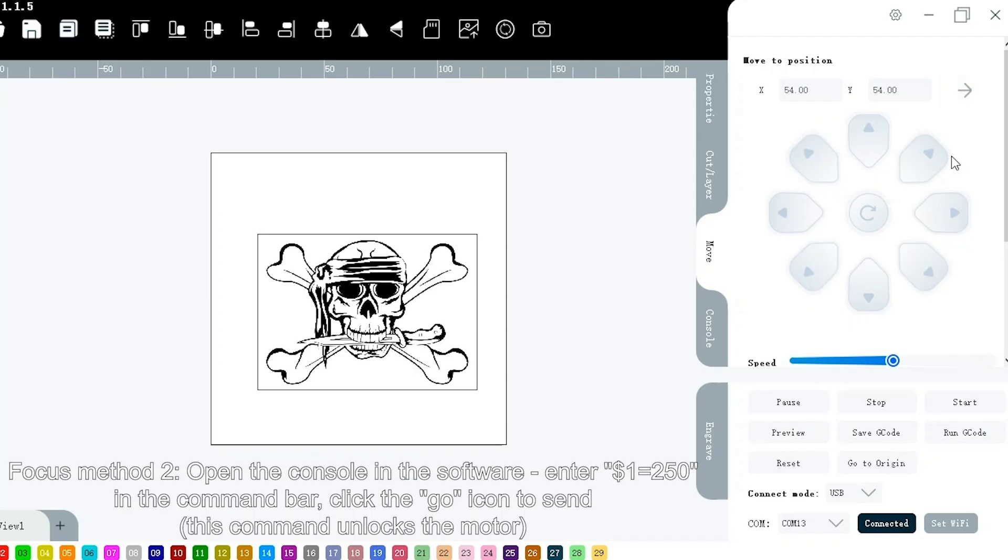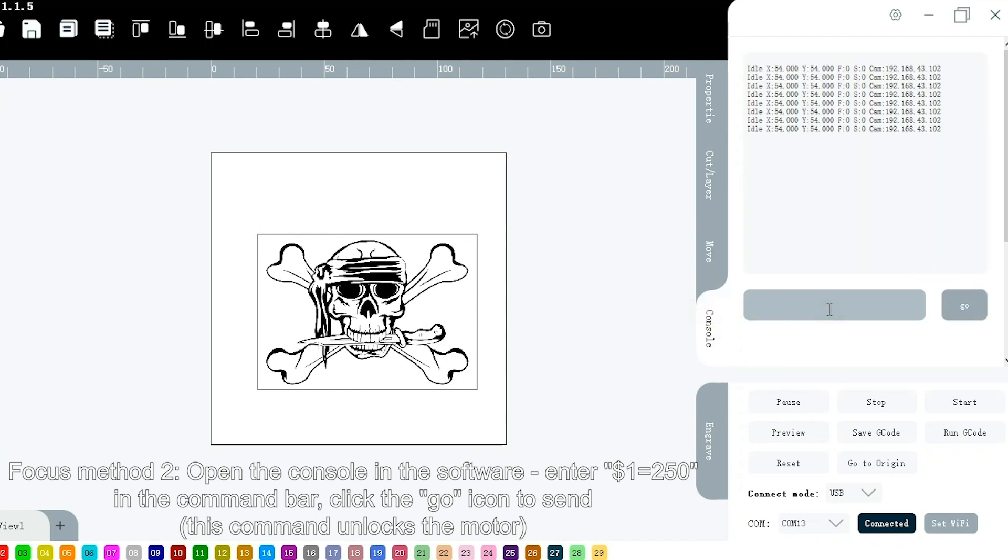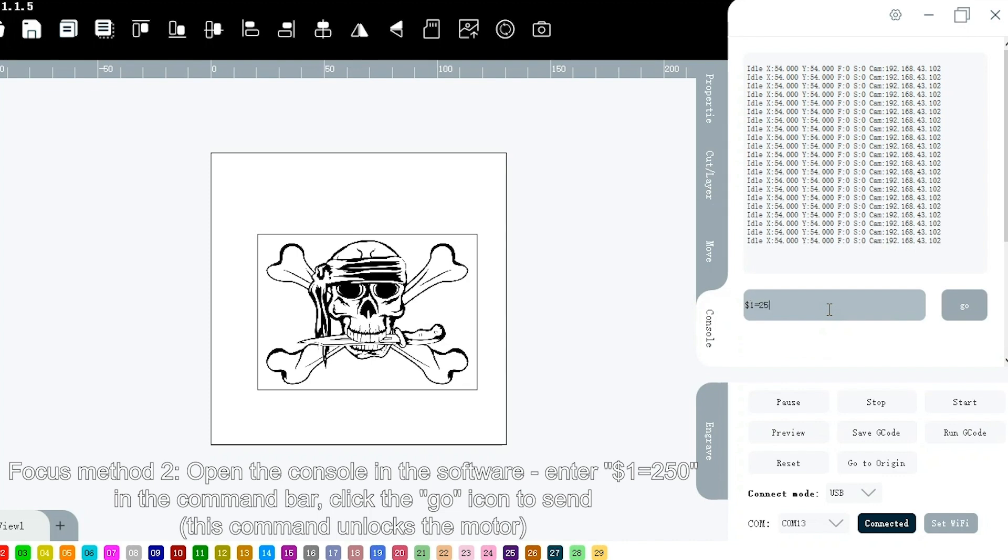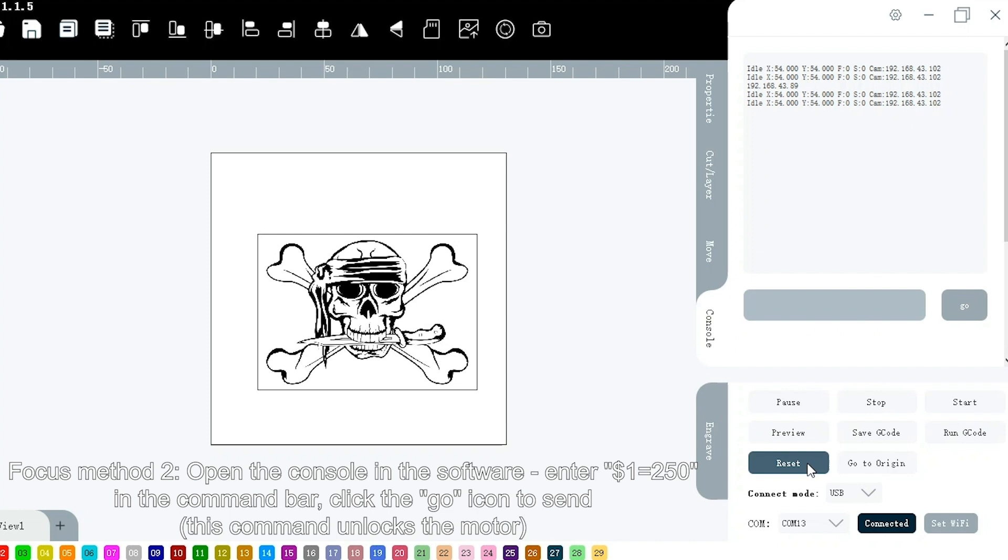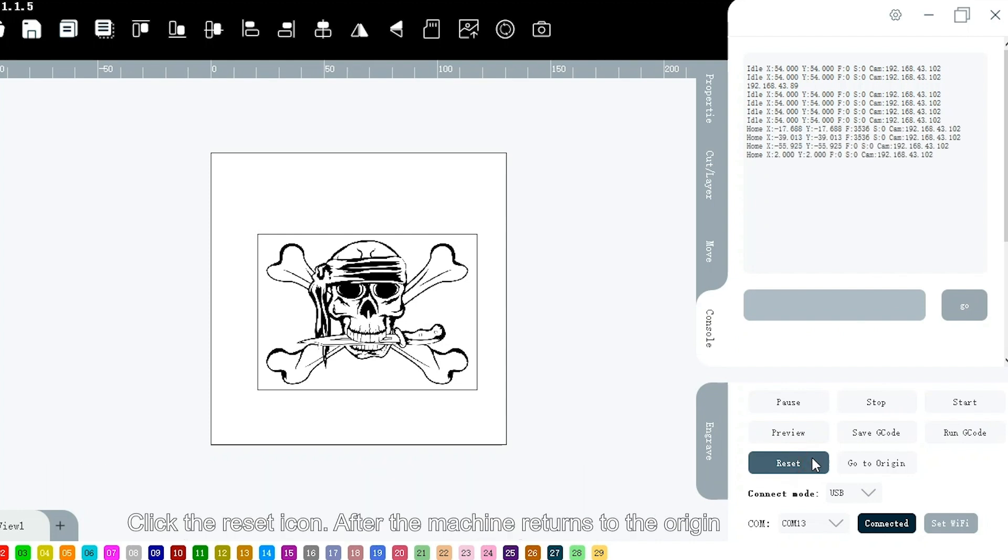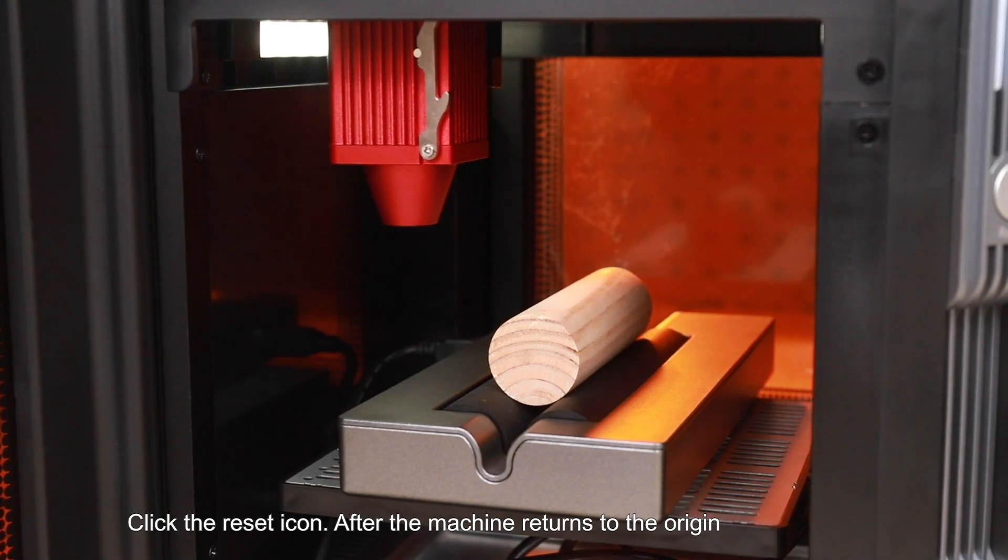Focus method 2: Zero pin the console in the software, enter $1 equal to 250 in the command bar, click the go icon to send. This command unlocks the motor. Click the reset icon after the machine returns to the origin.